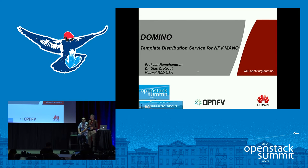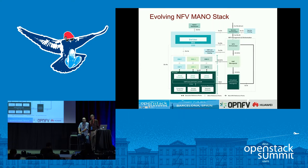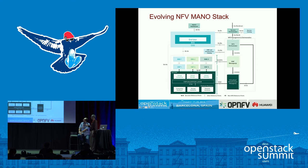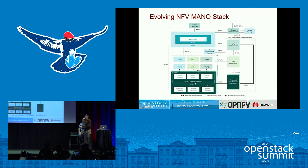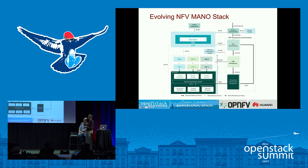What you see here is the VIM — the virtualized infrastructure manager — where OpenStack sits inside this virtualized infrastructure manager box, along with the SDN controller. We always talk of Neutron in OpenStack, but underneath we have the SDN controller which could be ONOS or ODL. That is the VIM portion, and we are talking of HCNFV architecture mapped here.